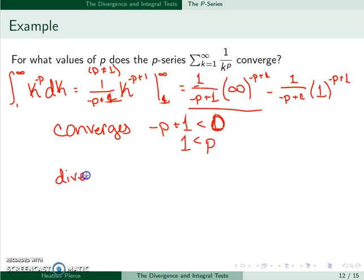However, if that exponent is positive, we will have issues. So if 1 is greater than p, it diverges.